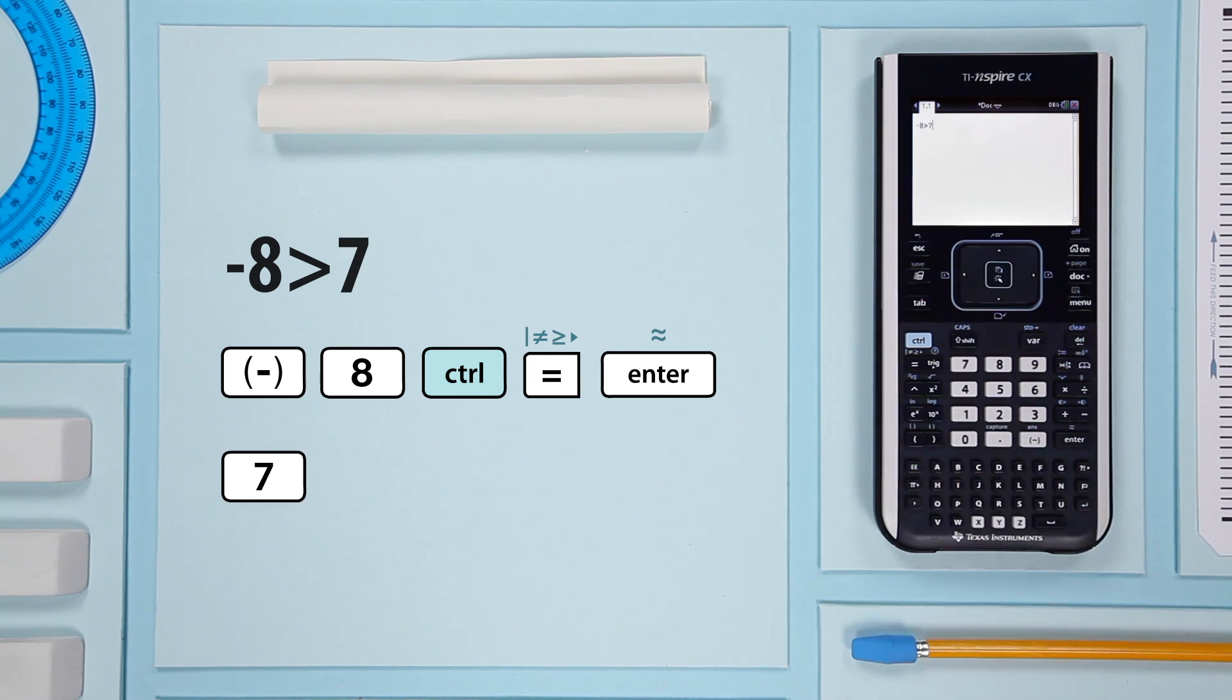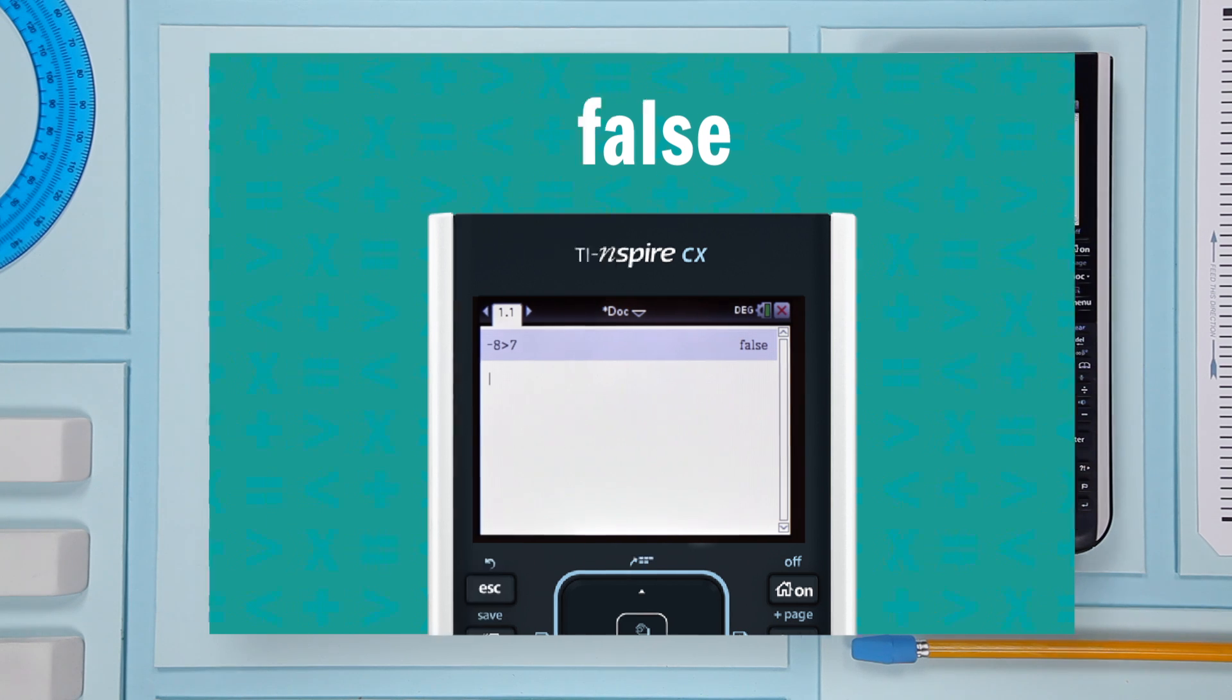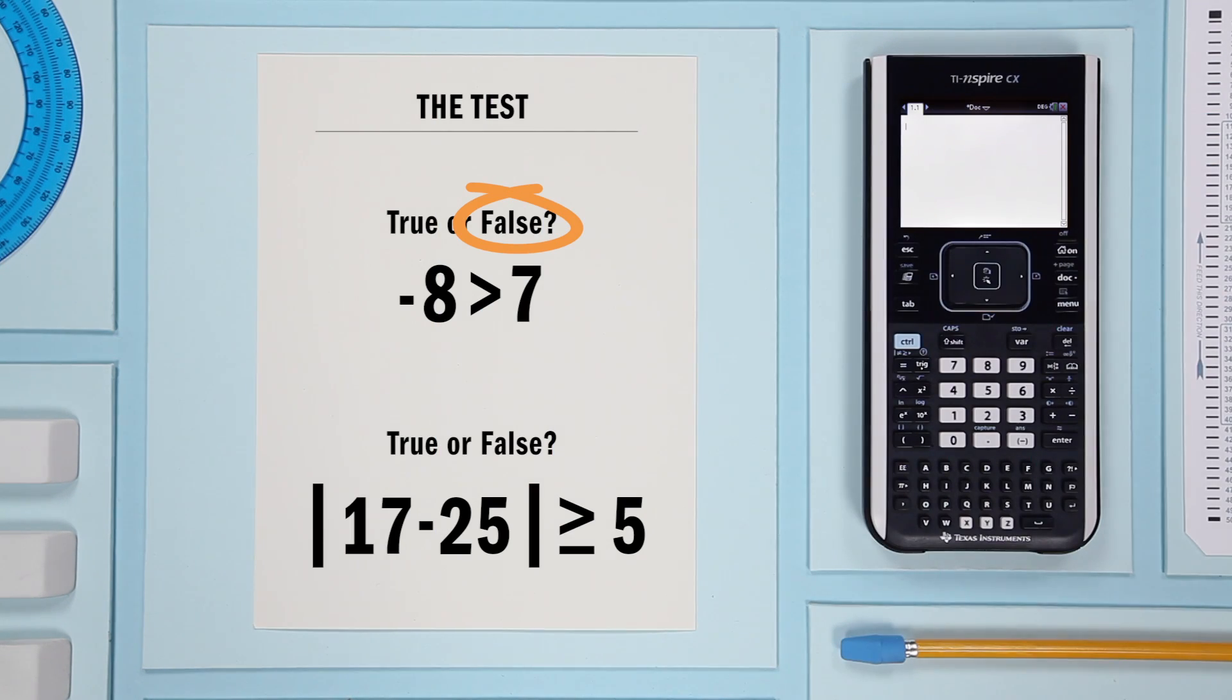Then 7 and enter. The result: false. Negative 8 is not greater than 7.